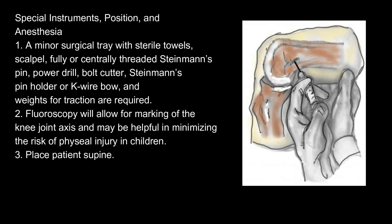Special instruments, position, and anesthesia: 1. A minor surgical tray with sterile towels, scalpel, fully or centrally threaded Steinman's pin, power drill, bolt cutter, Steinman's pin holder or K-wire bow, and weights for traction are required. 2. Fluoroscopy will allow for marking of the knee joint axis and may be helpful in minimizing the risk of physeal injury in children.